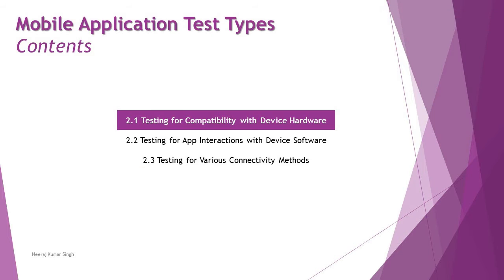This chapter will be broken down into three different segments: 2.1 testing for compatibility with device hardware, 2.2 testing for app interaction with device software, and 2.3 testing for various connectivity methods. As part of this tutorial, we are getting started with 2.1, but as it is quite long, we have broken it into three different parts to help you understand every concept in detail. So getting started with 2.1 testing for compatibility with device hardware — this is part one.